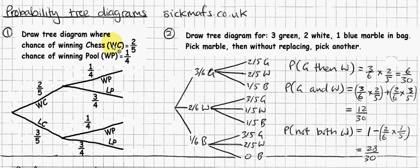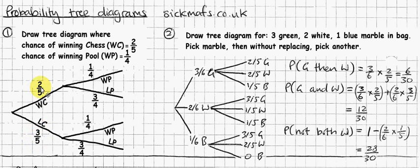I'm going to play chess first, and the chance of winning chess — abbreviated to WC — is two-fifths. I can either win chess or lose chess. Notice it doesn't say lose chess, because sometimes you have to work on the assumption. If you win chess, then the other option is lose chess, unless they tell you you can draw as well. The chance of winning chess is two-fifths, so automatically the chance of losing chess has to be three-fifths, because probabilities should add up to one.